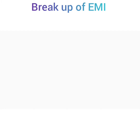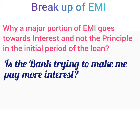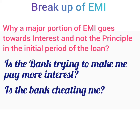Loan borrowers are often confused why a major portion of EMI goes to interest and not the principal in the initial period of the loan. Is the bank trying to make me pay more interest? Is the bank cheating me? Why is such a big amount allocated to interest and not the principal? These are the most common thoughts that come to a borrower who is a layman. His thoughts are justified as he doesn't know how the EMI gets divided between interest and principal.